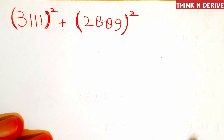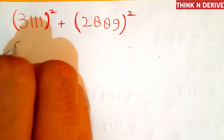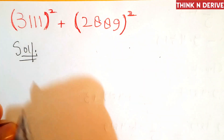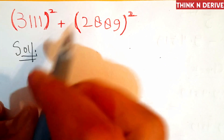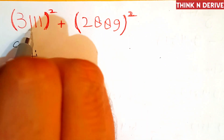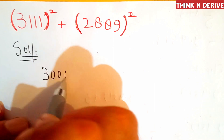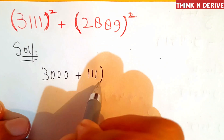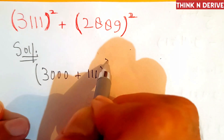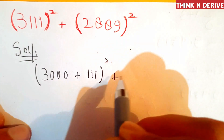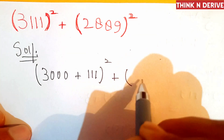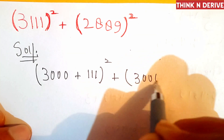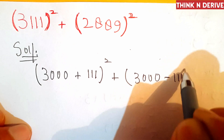Hi everyone. How to solve 3111 squared plus 2889 squared without using a calculator. In the first step, we'll express this as (3000 + 111) squared plus (3000 - 111) squared.